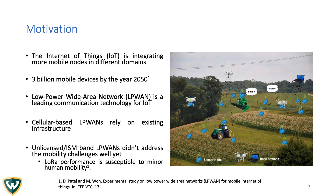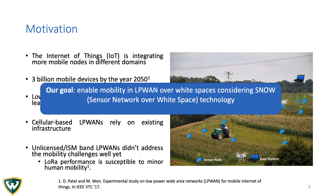To enable large-scale mobility, cellular-based LPWANs rely on the existing infrastructure, which is costly and sometimes unavailable in rural areas. On the other hand, unlicensed or ISM-band LPWANs did not address the mobility challenge well yet. A study on LoRa performance, which is regarded as the leading LPWAN technology, shows its performance is susceptible to minor human mobility. So our goal is to enable mobility in LPWAN over wide spaces, considering SNOW technology.